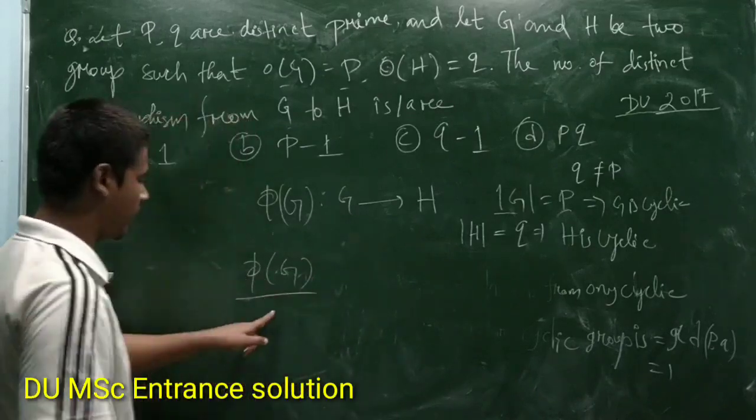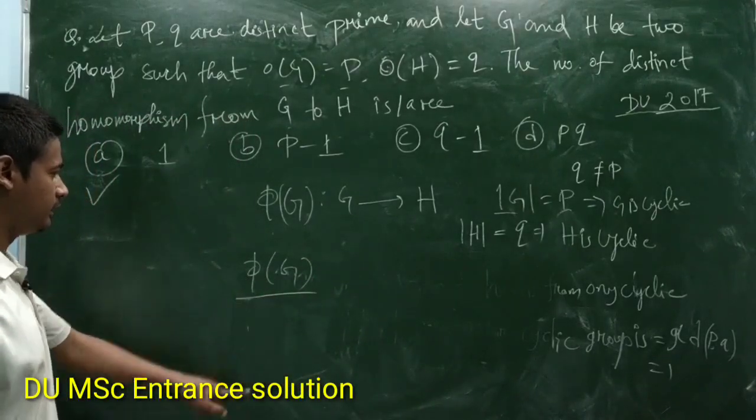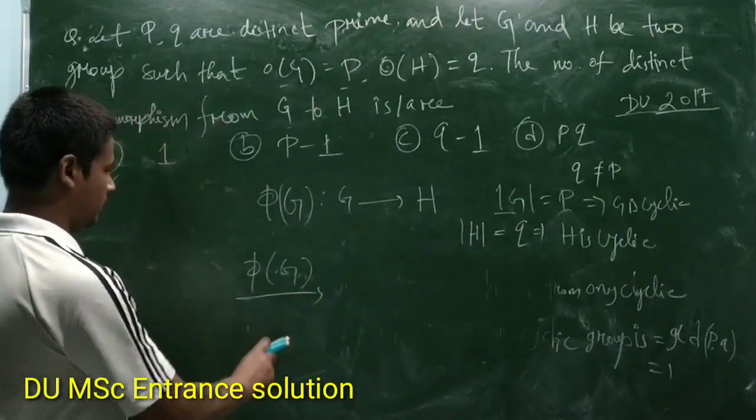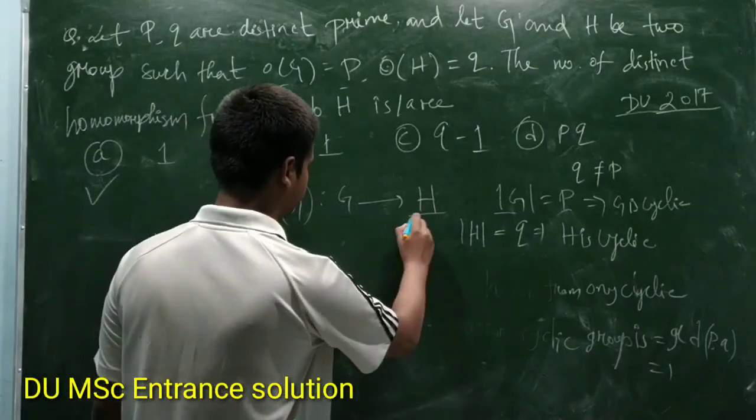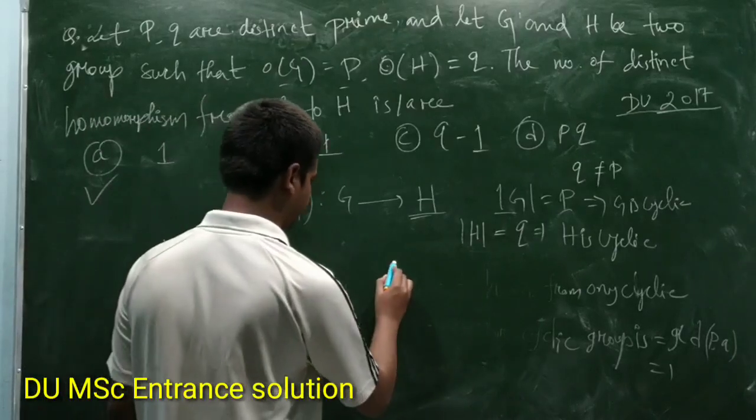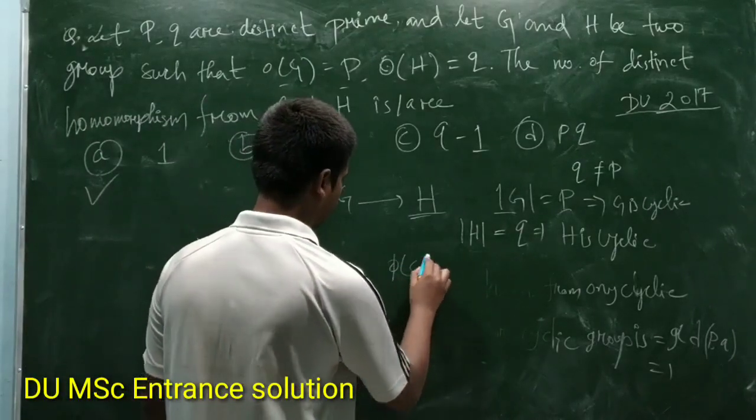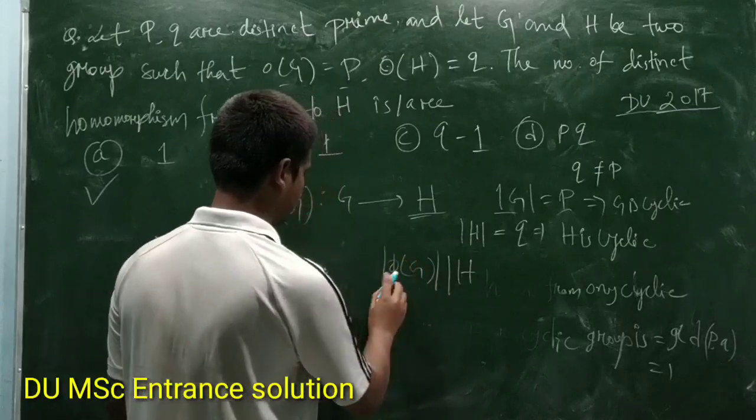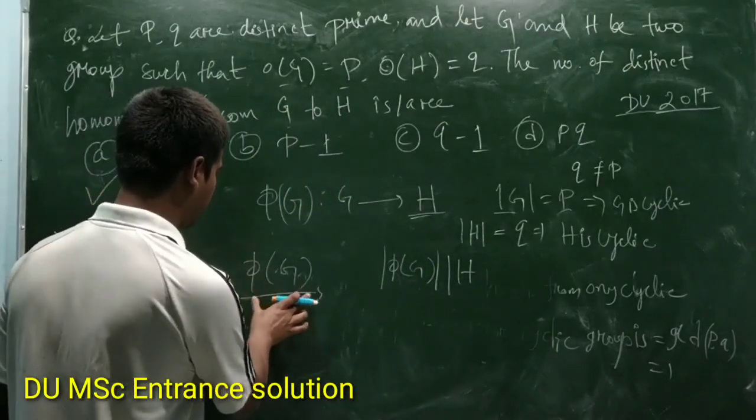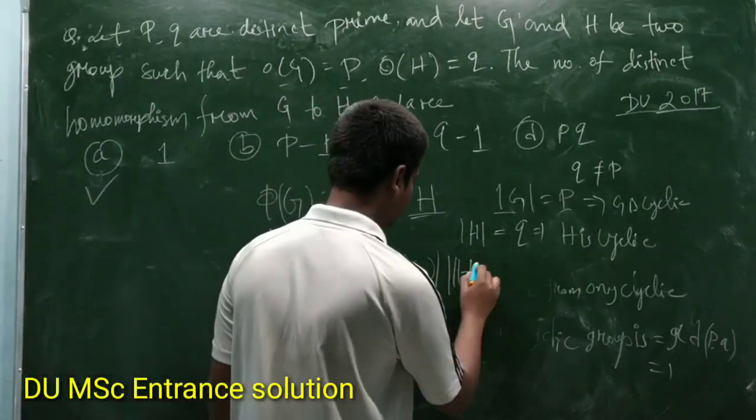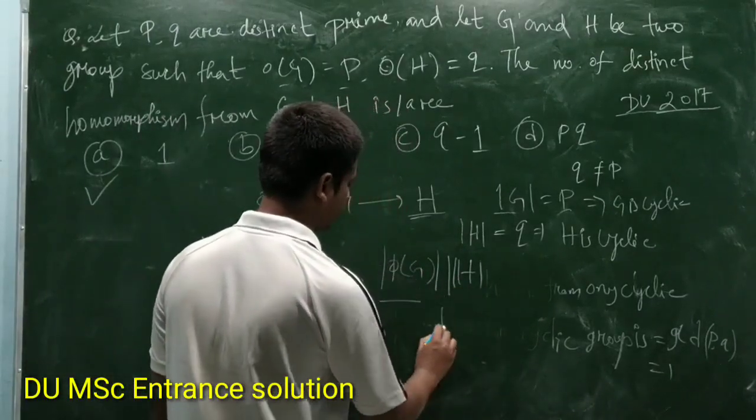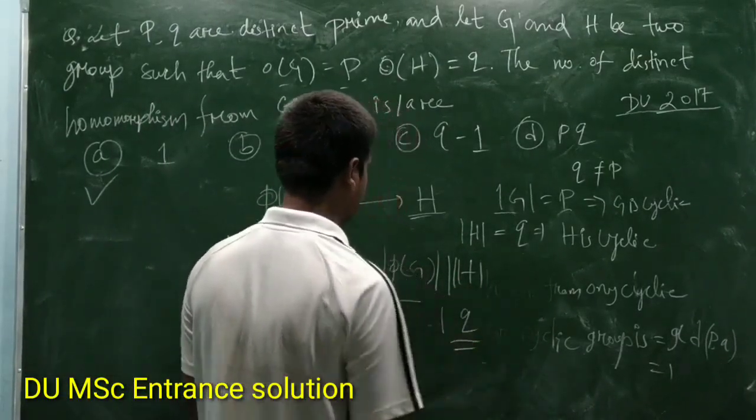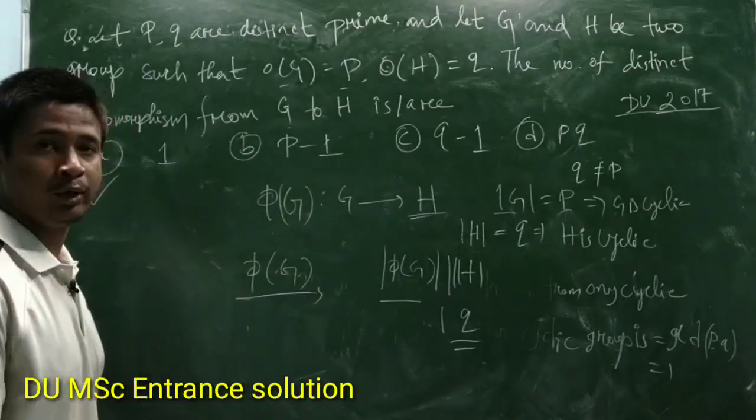if Phi(G) is a homomorphism, then we know it will be a subgroup of H and it will divide - order of this homomorphism will divide order of H, and again we know that